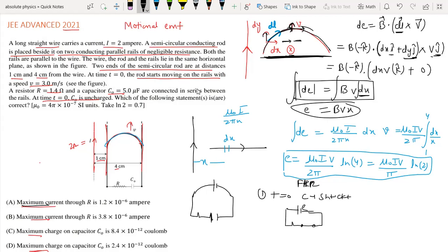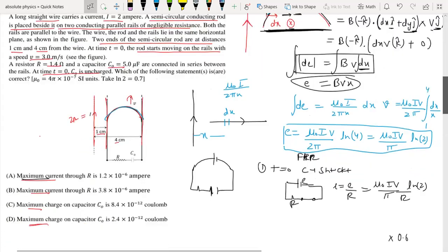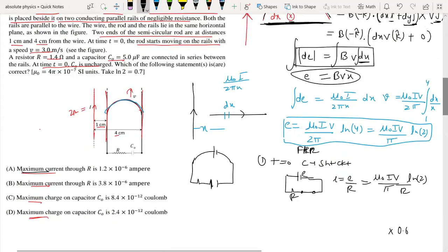For a short circuit, the current equals EMF divided by resistance. So I_max = E/R = (μ₀Iv)/(πR) × ln(2).